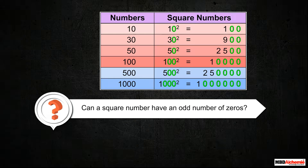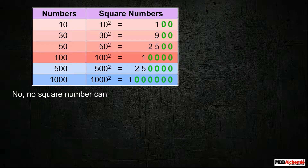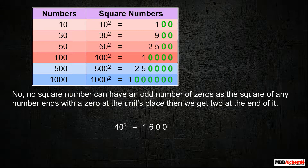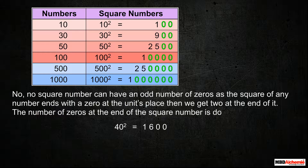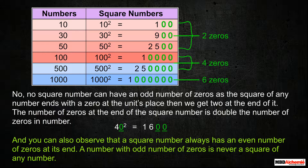Can a square number have an odd number of zeros? No, no square number can have an odd number of zeros, as the square of any number ends with zeros at the unit's place, giving double the count. A square number always has an even number of zeros at its end, and a number with an odd number of zeros is never a square of any number.